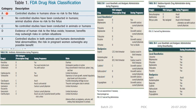Drug safety categories during pregnancy: Category A — controlled studies in humans show no risk to the fetus; Category B — no controlled human studies but animal studies show no risk; Category C — no controlled studies in either animals or humans; Category D — evidence of human fetal risk is present, though benefits may outweigh risks in certain situations; Category X — totally avoided, as controlled studies in both animals and humans demonstrate fetal abnormalities.